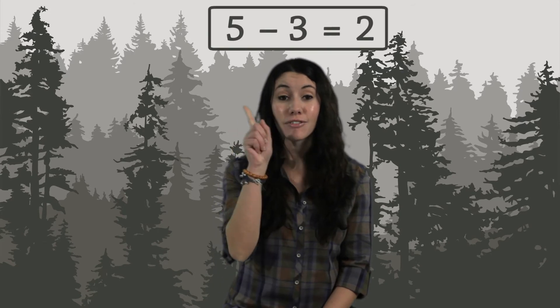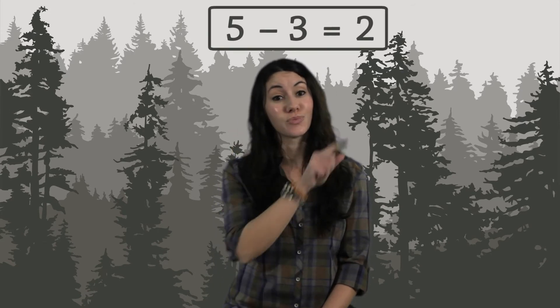In this hand, I have five spheres. If I take away three spheres, I'm left with two. This is the essence of subtraction. You start with a certain number of things and then take some away. We write this as five minus three equals two.